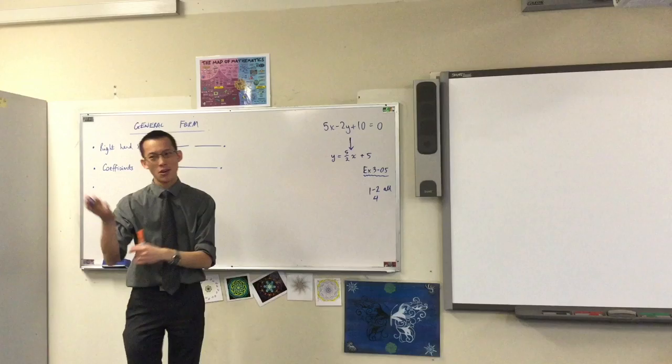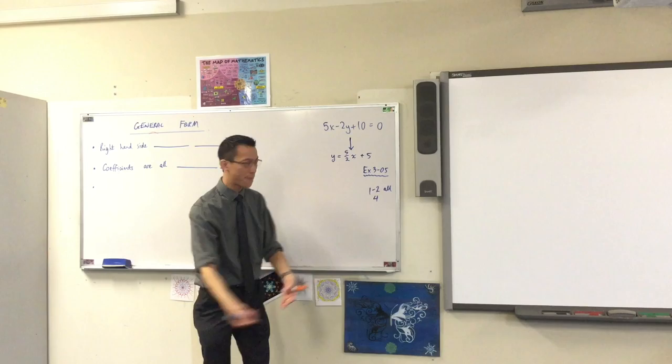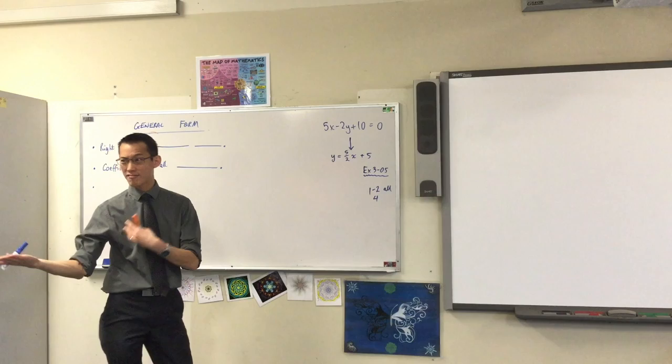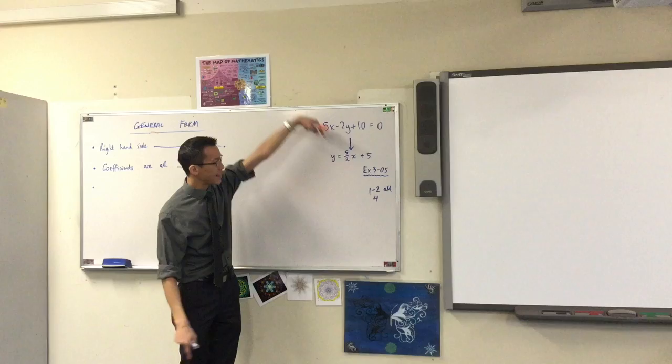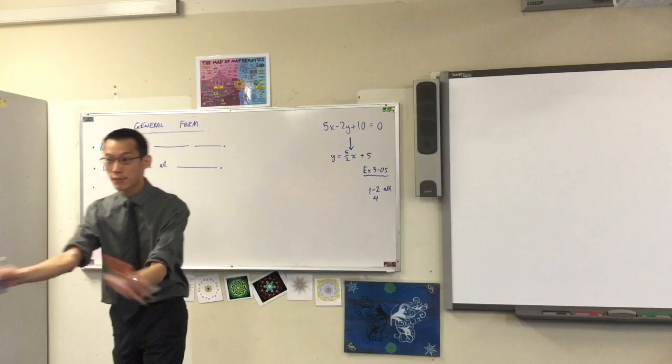You can call it slope-intercept form, because that's the slope, that's the intercept. You can also call it gradient intercept form, because gradient's just another slope. So we saw that going in that direction was useful. It gives you these features about the line. You don't even have to graph it, you can just look at the numbers.